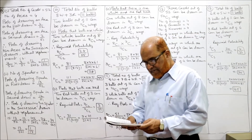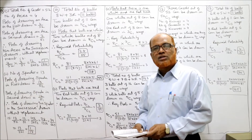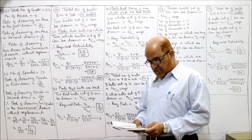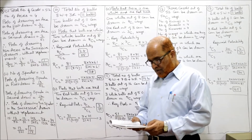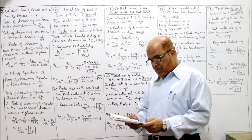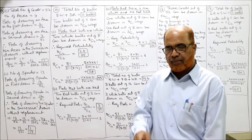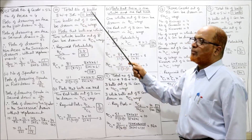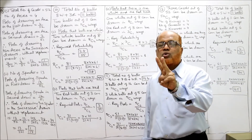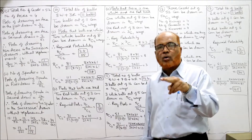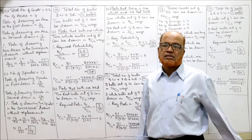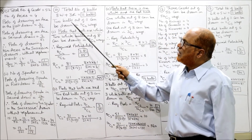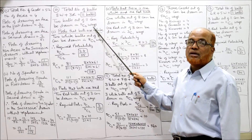Problem 10: A bag contains 8 white and 3 red balls. Total number of balls are 11. Two balls are drawn at random. Find the probability that both are white, both are red, and one white and one red. Out of 11 total balls, two balls are drawn. Total number of ways to draw 2 balls out of 11 is 11C2 ways — this is the maximum possible outcomes.